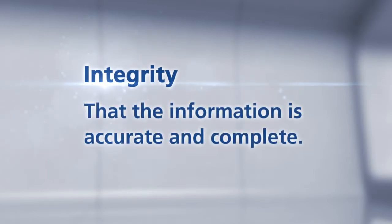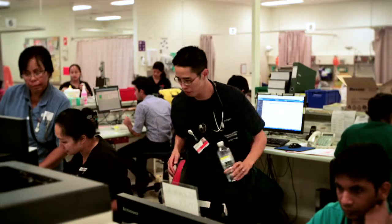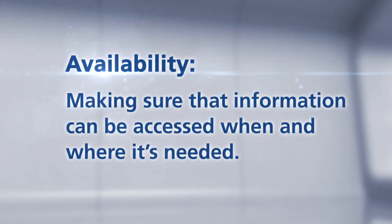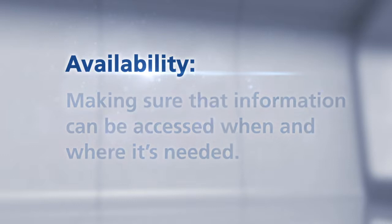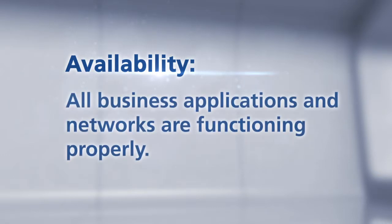Integrity is about ensuring the information is accurate and complete. For example, we all expect that patient medical records will be accurate, but a lack of information integrity could have serious consequences for the patient. Availability is about making sure that information can be accessed when and where it's needed and that all business applications and networks are accessible and functioning properly.